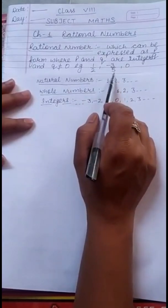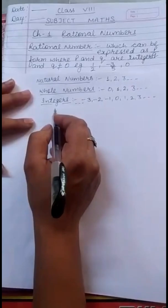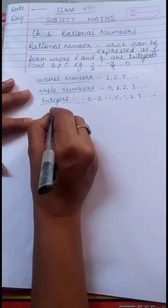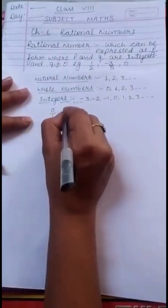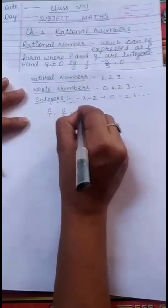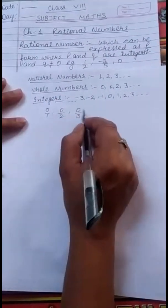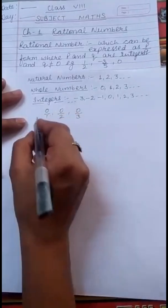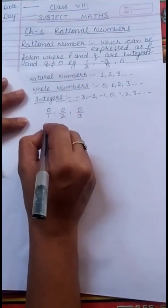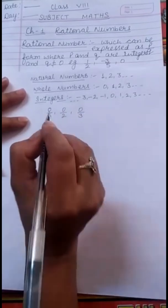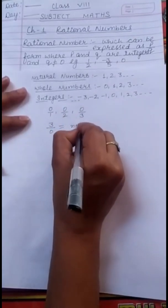For example: 1 by 2, minus 3 by 5, and 0. Now, how is 0 a rational number? We can write 0 as 0 upon 1, 0 upon 2, 0 upon 3. So in this way, 0 is a rational number, but we cannot write 0 in the denominator of any number — that is, 3 upon 0 is not defined.